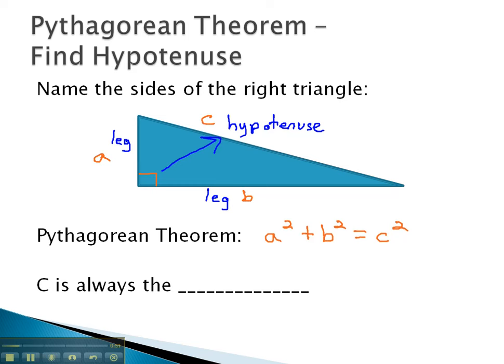Now, we can switch a and b, the two legs. However, it's very important that c is always the hypotenuse, or c is always the longer side, the side that's across from the right angle.